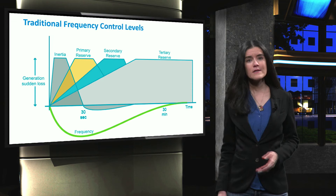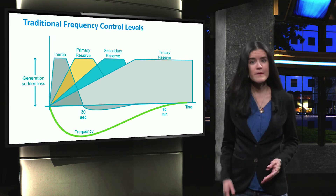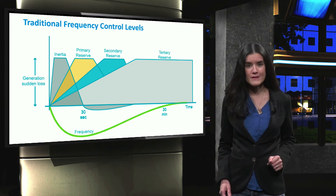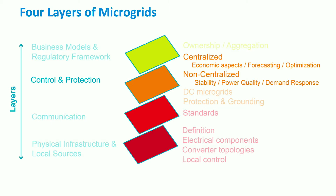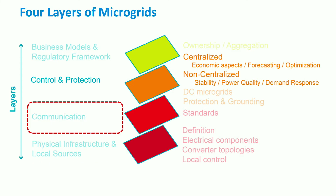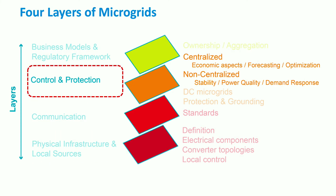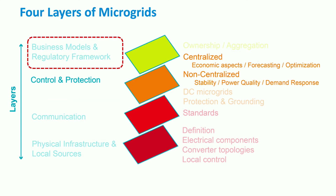Now let's look at some more hierarchical structures, but focused on microgrids. Generally speaking, the structure of a microgrid is made up of four different layers. At the lowest level, we have a layer on physical infrastructure and local sources. Then we find a communication layer. Above this, we have the control and protection layer. And finally on top, the layer on business models and regulatory framework.